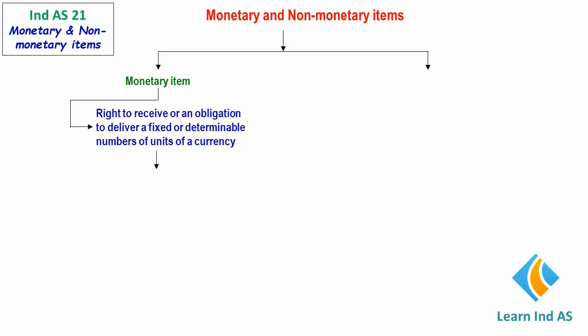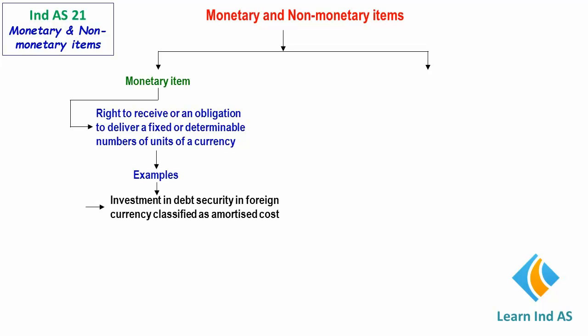One example of a monetary item is investment in debt security in foreign currency classified as amortized cost. This is recorded as a monetary item because the entity would hold this item till maturity and on maturity would receive the stated maturity amount from the issuer in a predetermined number of units of the foreign currency.